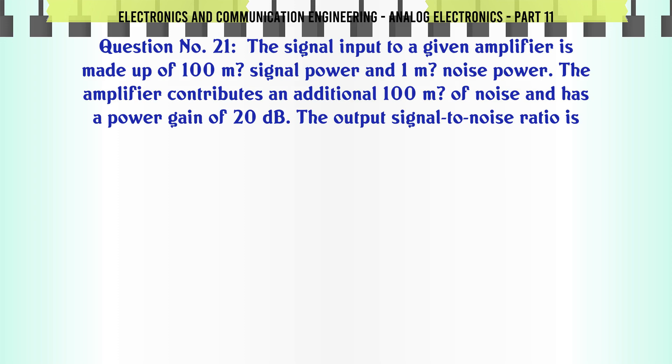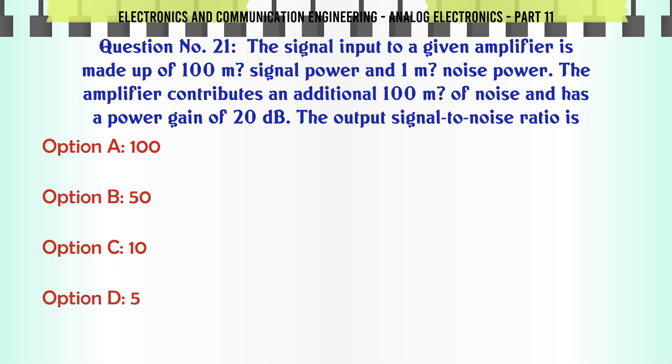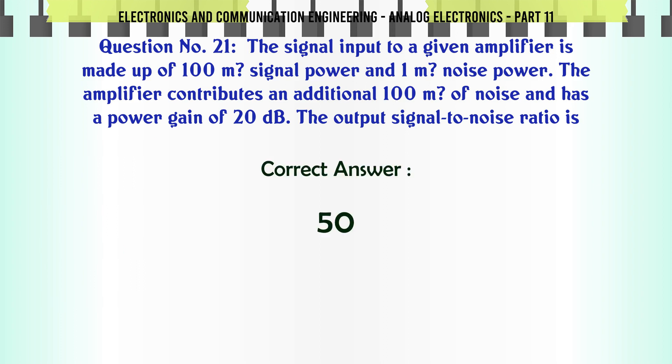The signal input to a given amplifier is made up of 100mW signal power and 1mW noise power. The amplifier contributes an additional 100mW of noise and has a power gain of 20dB. The output signal to noise ratio is. A. 100. B. 50. C. 10. D. 5. The correct answer is provided.